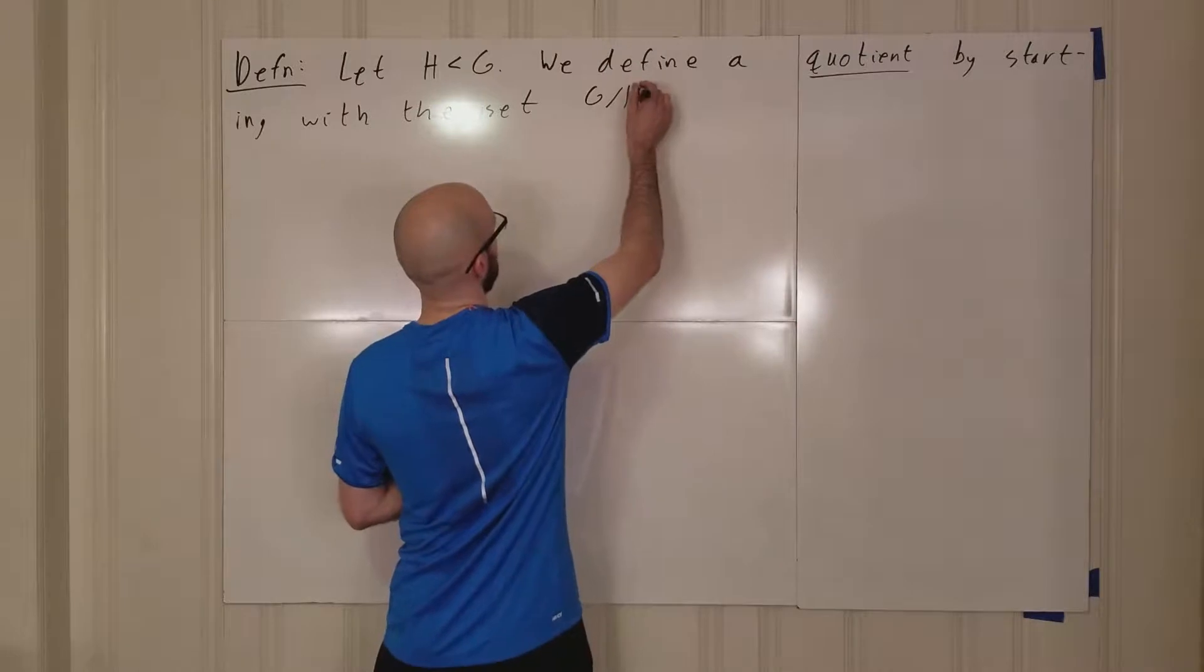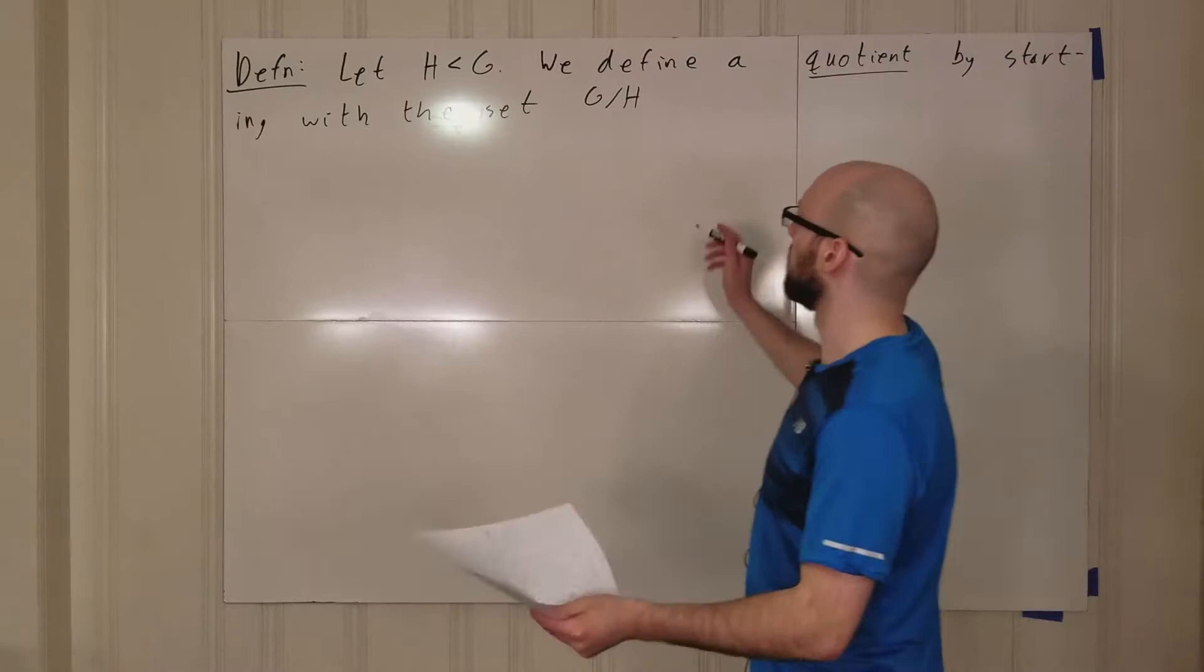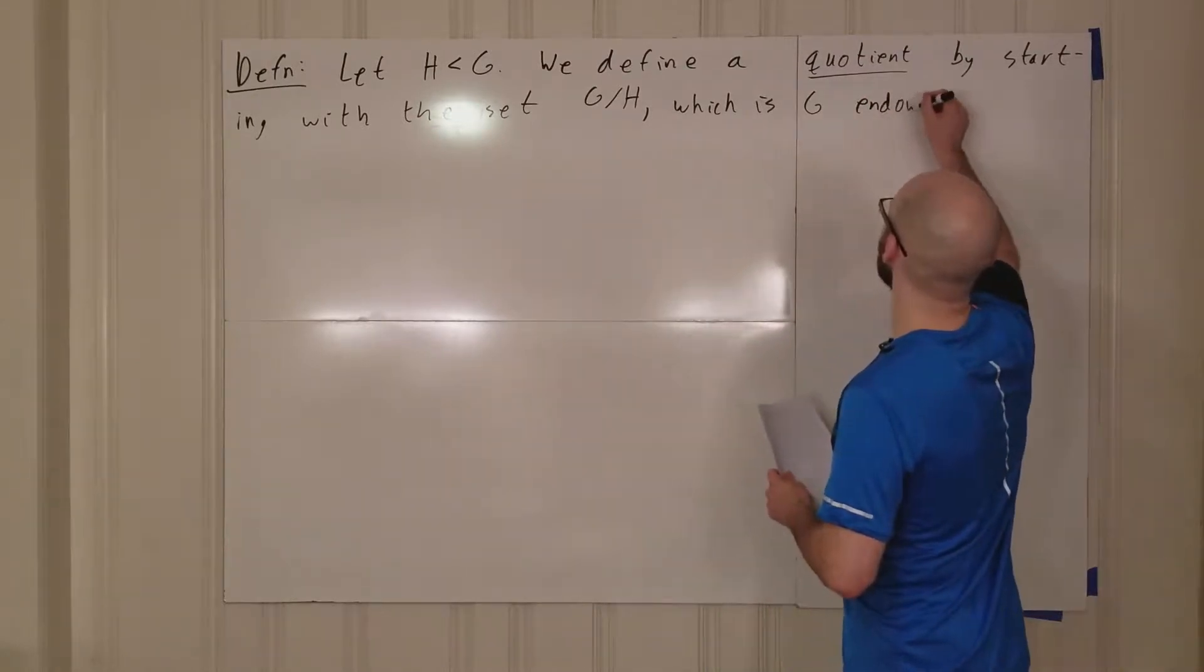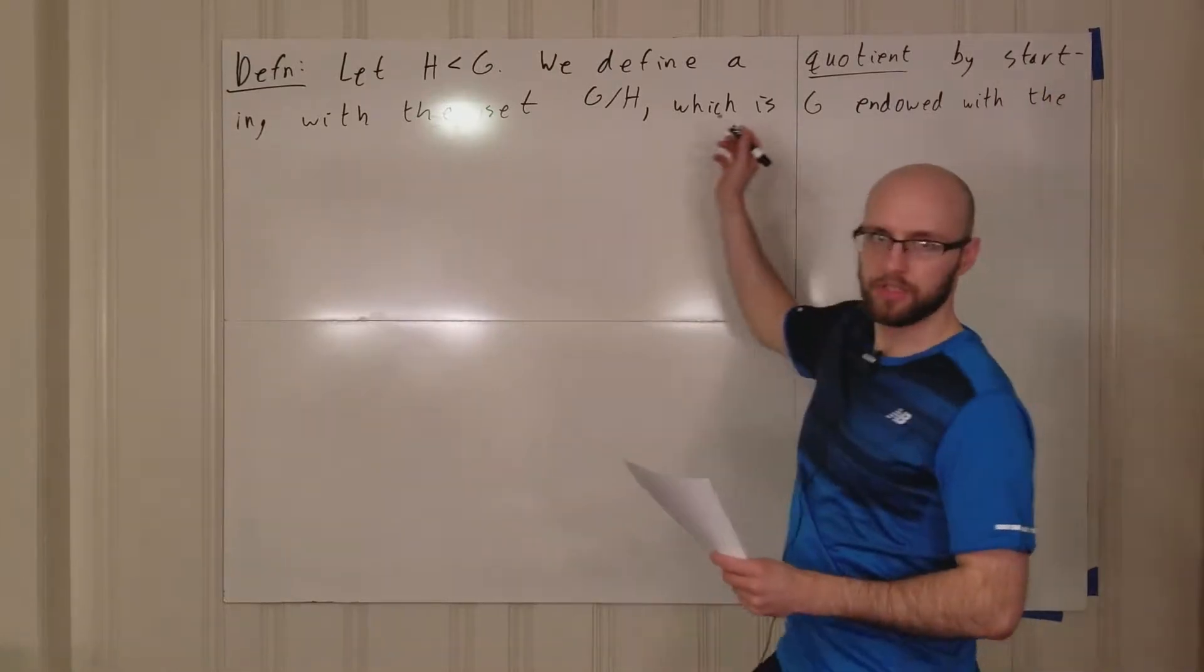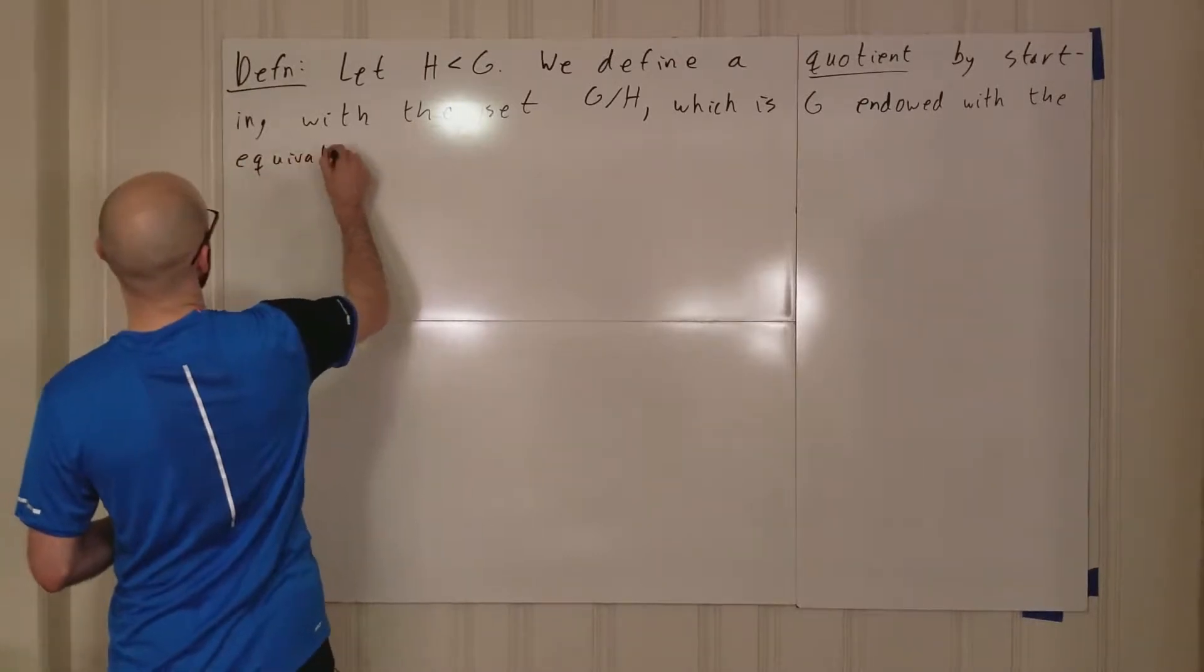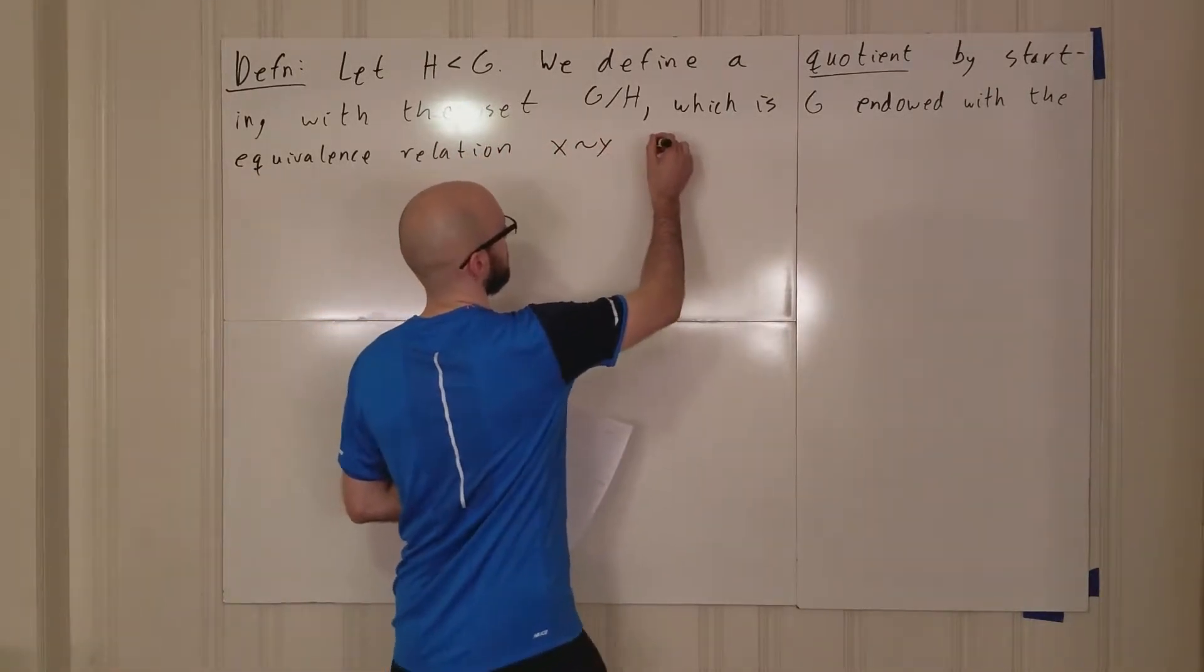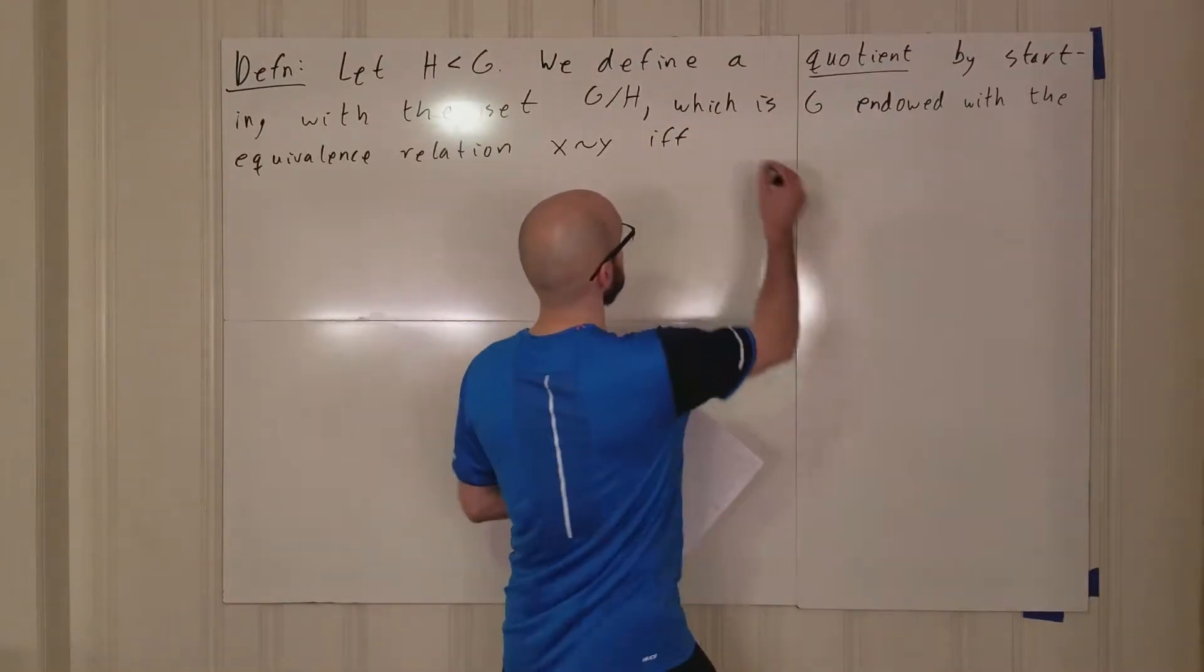G mod H, which is G endowed with the equivalence relation where x is equivalent to y if and only if x inverse y is an element of H.